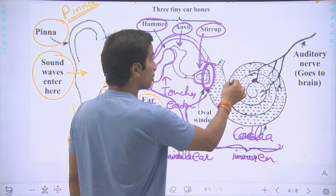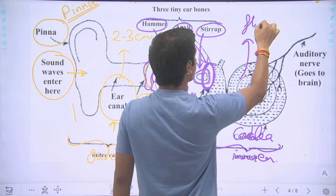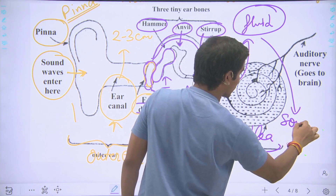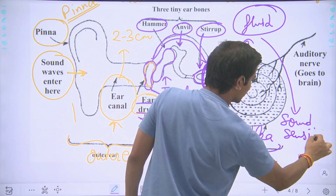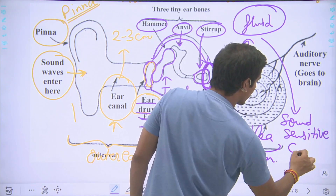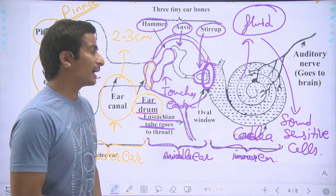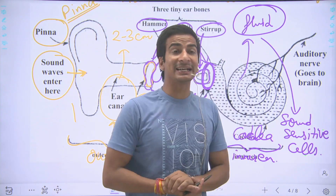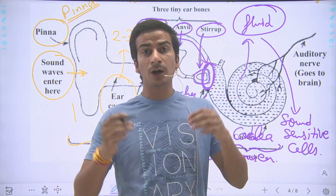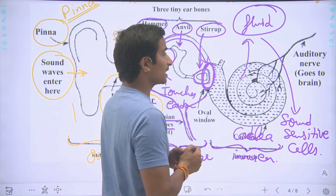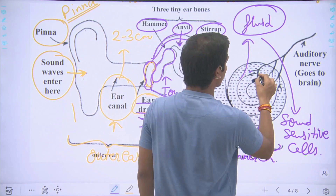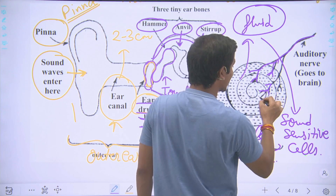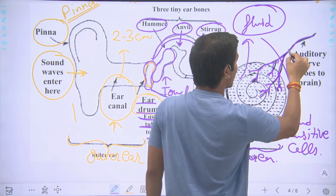Inside the cochlea there is a specific fluid, and within this fluid there are sound-sensitive cells. The property of these cells is that when they receive sound vibrations, they produce electromagnetic signals. These cells are connected with the auditory nerves.